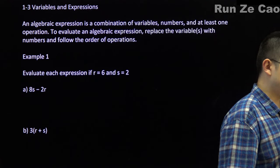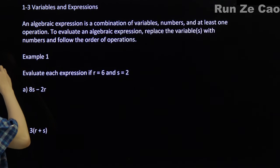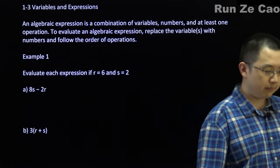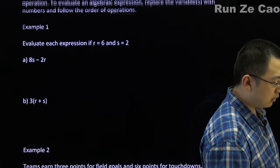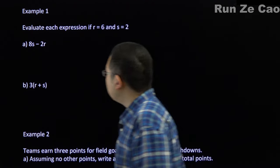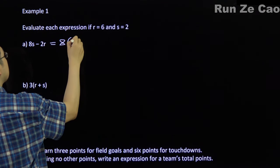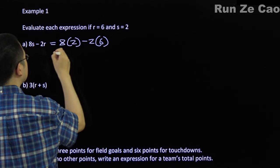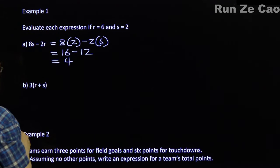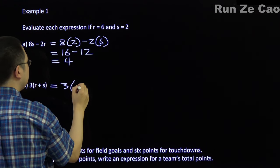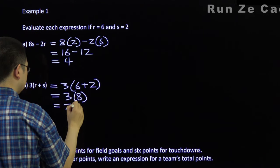Variables and expressions. An algebraic expression is a combination of variables, numbers, and at least one operation. To evaluate an algebraic expression, you replace the variables with numbers and follow the order of operations. For example, evaluate each expression if r = 6 and s = 2. Well, 8s − 2r: substitute in — 8 × 2 = 16, minus 2 × 6 = 12, so 16 − 12 = 4. Three times (r + s) = 3 × (6 + 2) = 3 × 8 = 24.